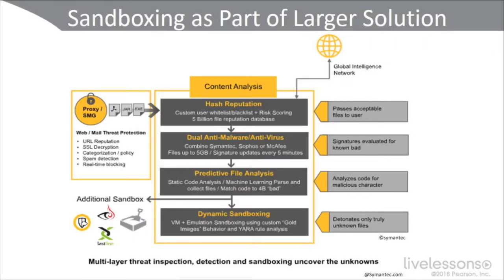Take a look at this diagram. This is sandboxing as part of a larger solution from Symantec. On the left-hand side, we have the proxy SMG looking at different files — for example, JAR files and EXE files — with its built-in web and mail threat protection. That gets passed on to content analysis from Symantec: hash reputation, dual anti-malware, anti-virus using Symantec, Sophos, or McAfee, also predictive file analysis and dynamic sandboxing.